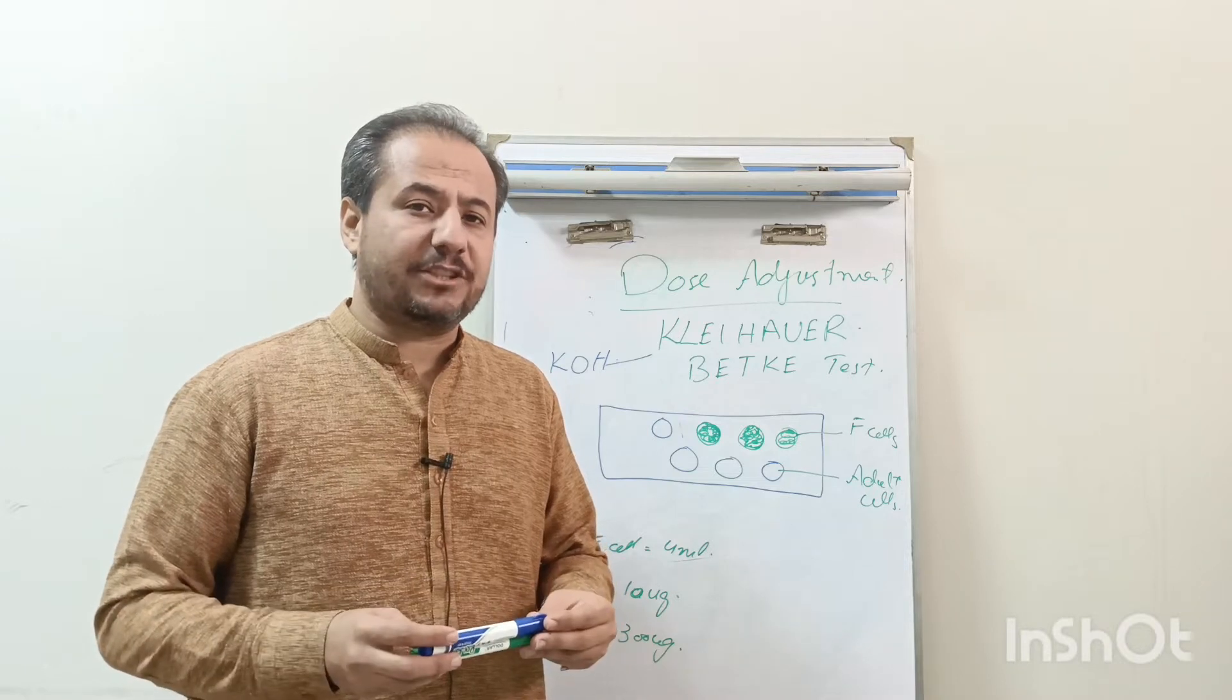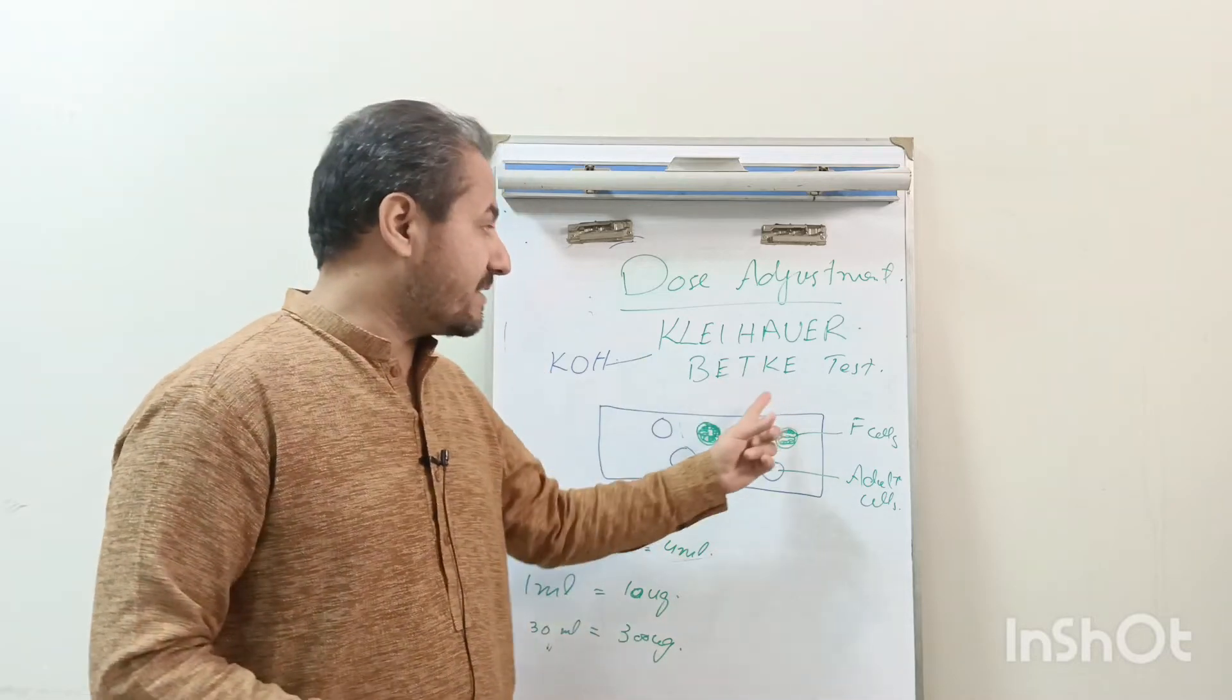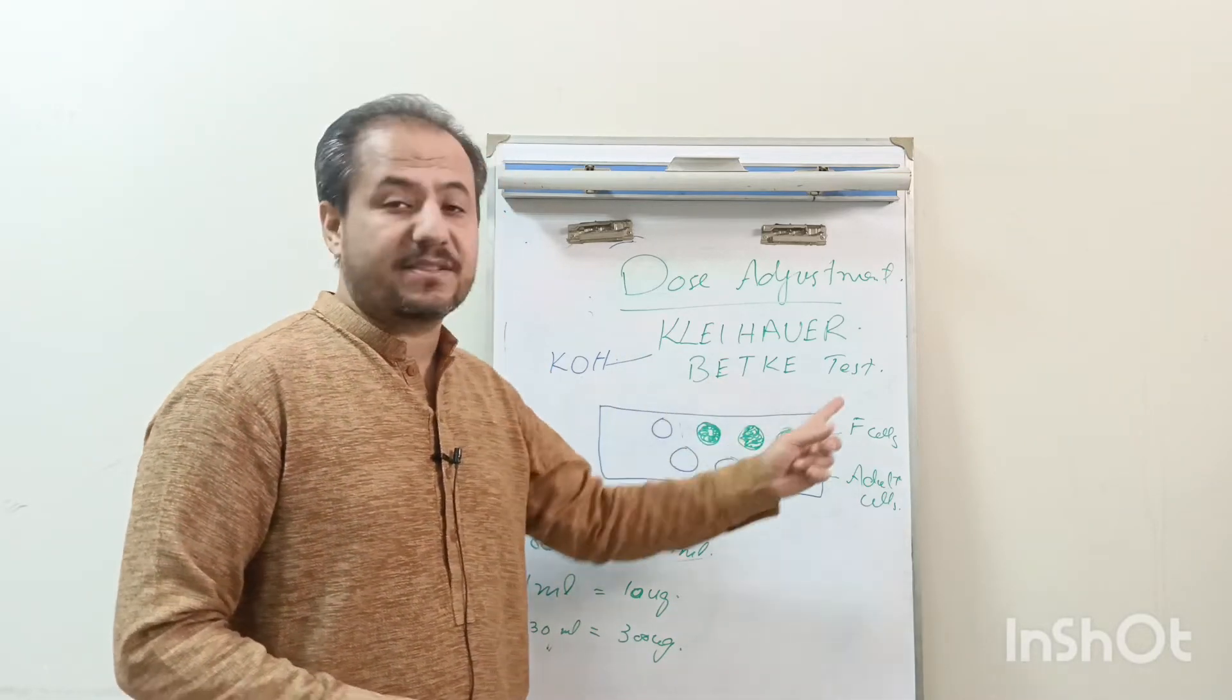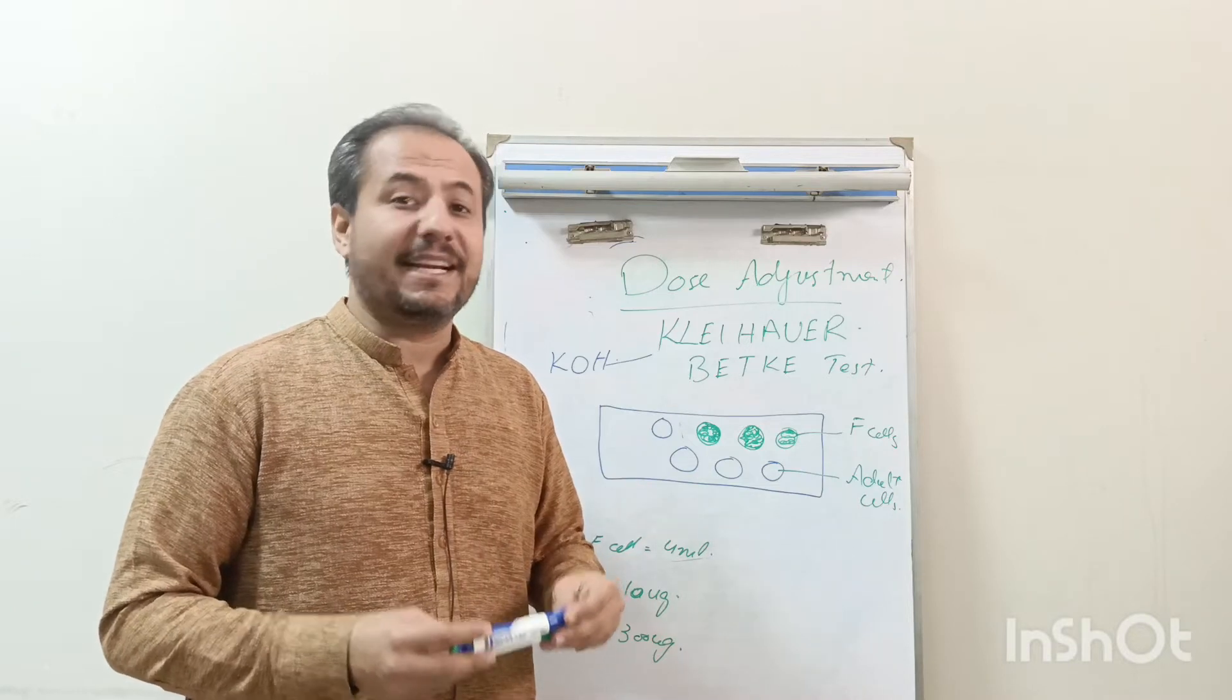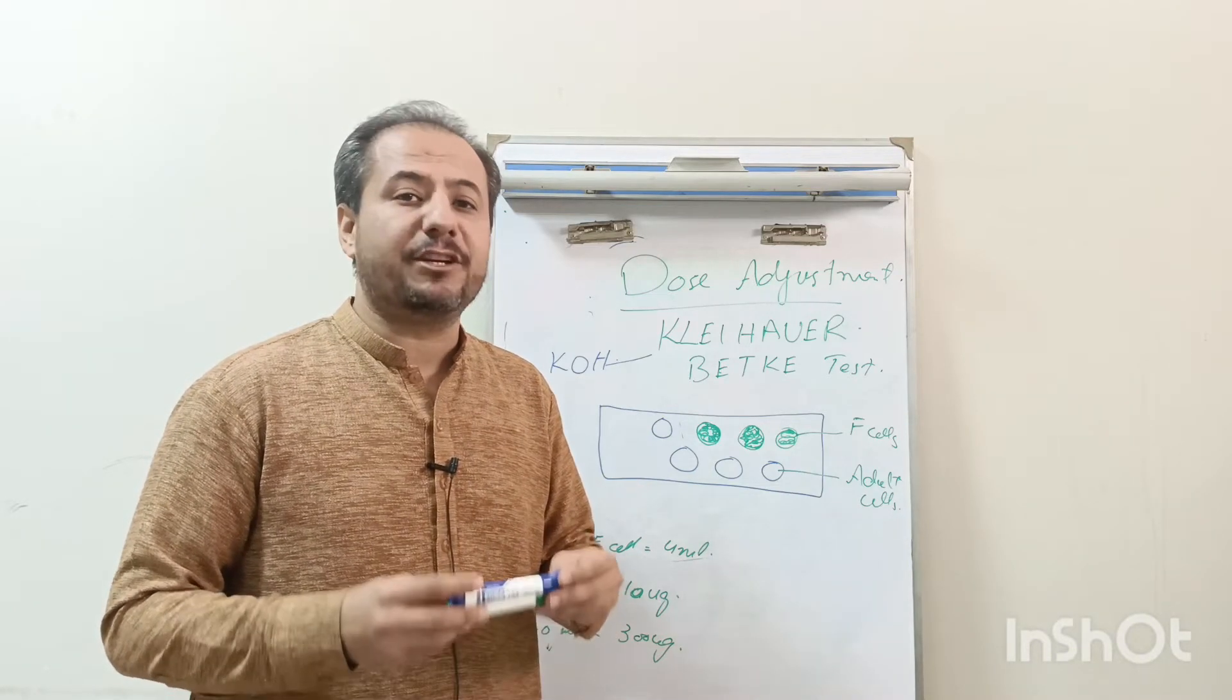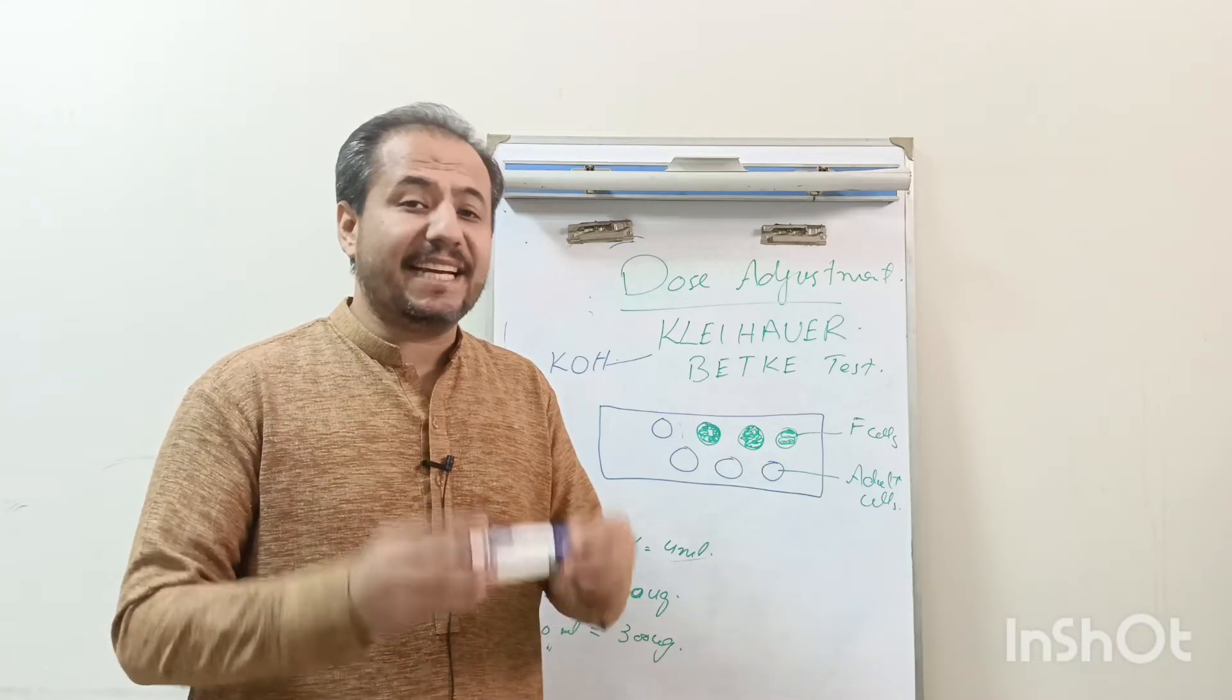For the dose calculation, we have to have a test which is known as Kleihauer test or Kleihauer-Betke test. On the basis of this test, we can determine how many ml of fetal-maternal hemorrhage occurred, and based on that fetal-maternal hemorrhage we can calculate the dose of RhoGAM.